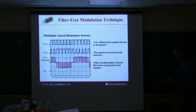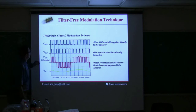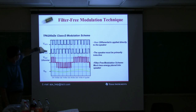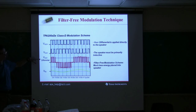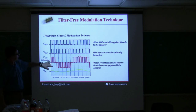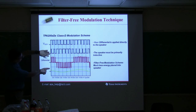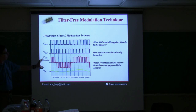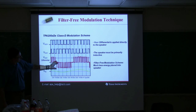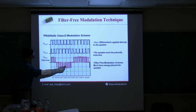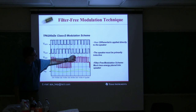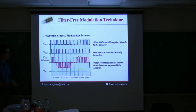Here's an example of the bridge-tied load configuration. We have a positive output and a negative output. When you use the math function on the scope to get a differential measurement — channel 1 minus channel 2 — you end up with a signal that puts two times the voltage across the speaker compared to single-ended, giving you twice the voltage and four times the power. You can see how when the signal goes negative, the output shifts negative; at the peak, the duty cycle is maximized, and the duty cycle represents the audio signal.